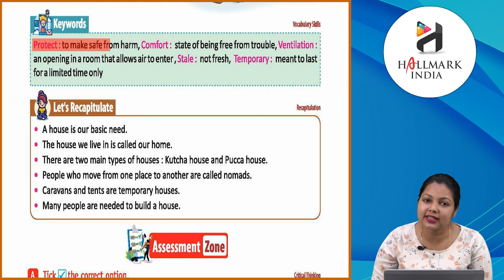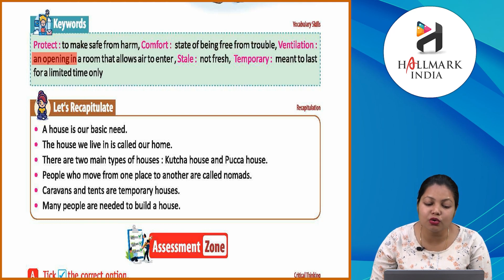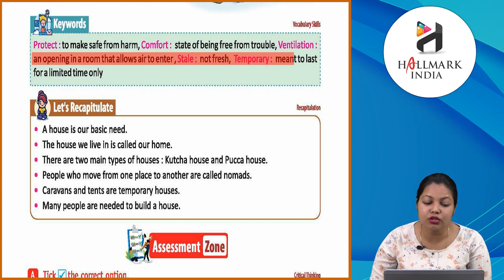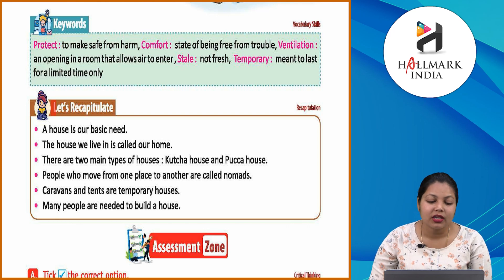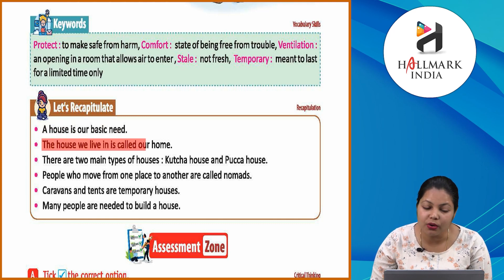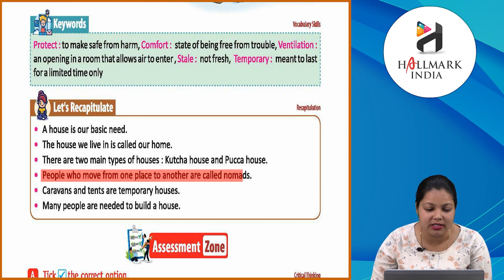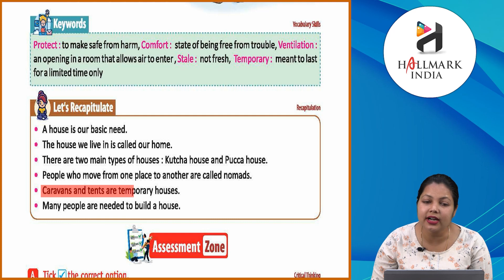Keywords: Protect — to make safe from harm. Comfort — state of being free from trouble. Ventilation — an opening in a room that allows air to enter. Recap: A house is our basic need; the house we live in is called our home. There are two main types of houses — kaccha and pakka. People who move from place to place are called nomads; caravans and tents are temporary houses. Many people are needed to build a house.